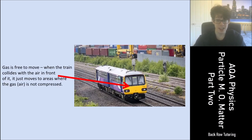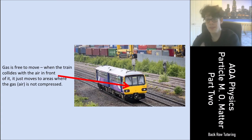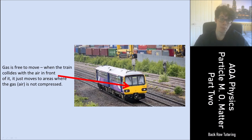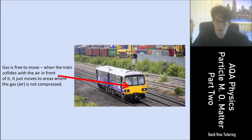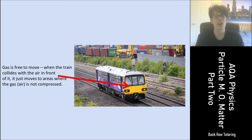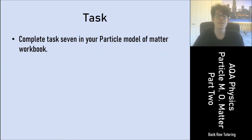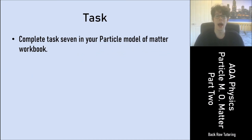Consider a train moving along a railway — the air in front is moved, but because the gas is free to move over, around, or under the train, when the train collides with air it just moves to areas where the air is not compressed. If following along in your revision workbook, complete task 7.